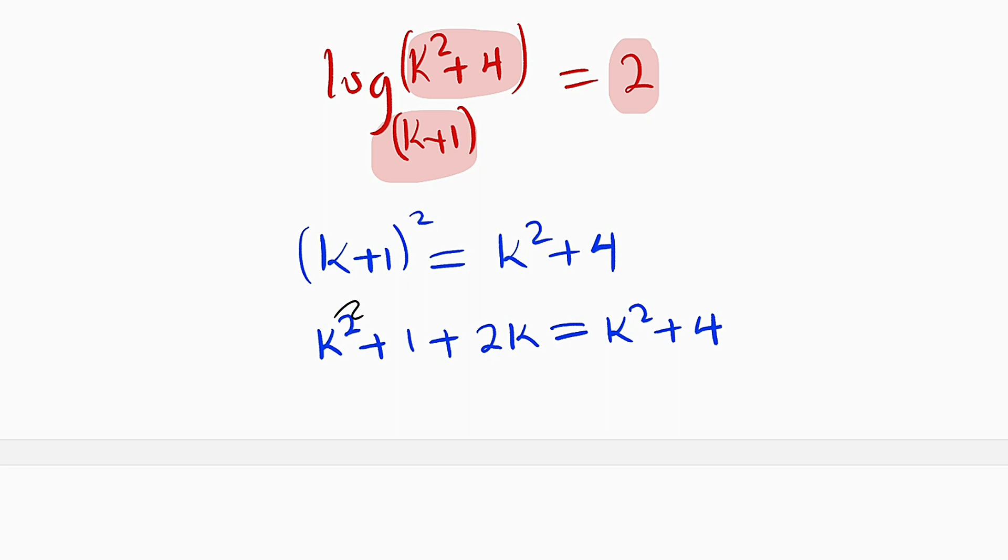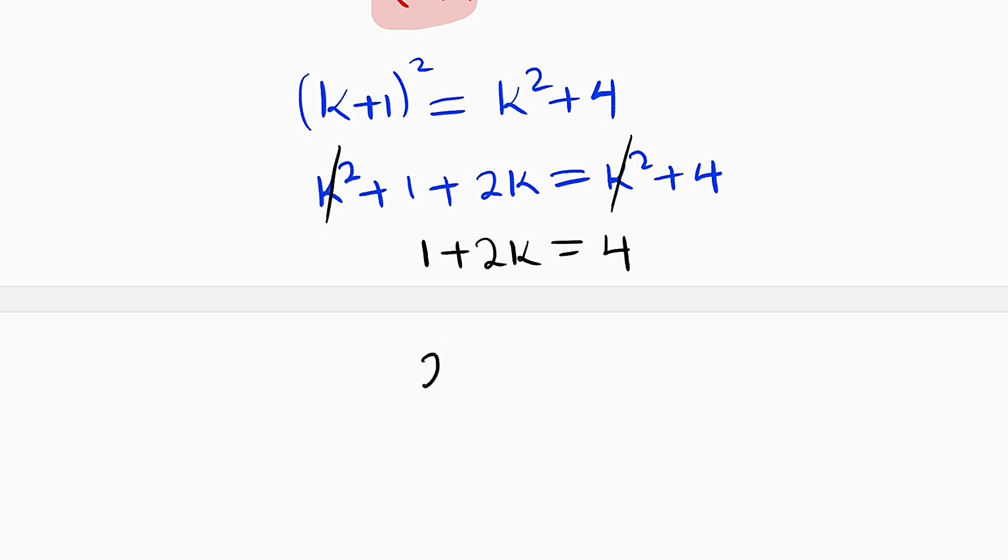By cancellation, k squared will cancel k squared. All we have is 1 plus 2k equal to 4. We can subtract 1 from both sides such that 2k equal to 4 minus 1. 2k equal to 3.